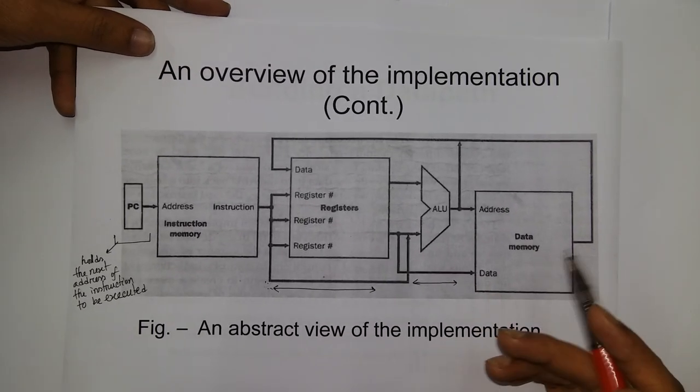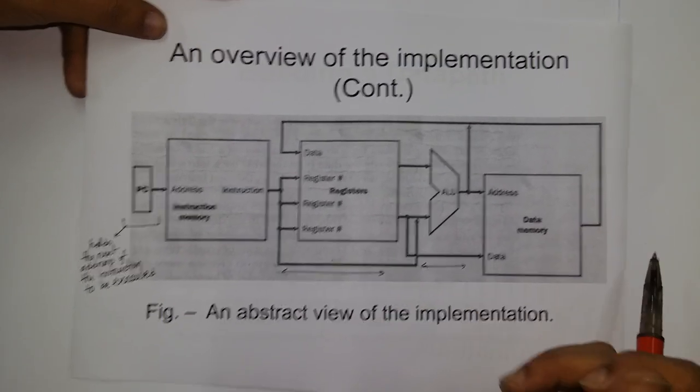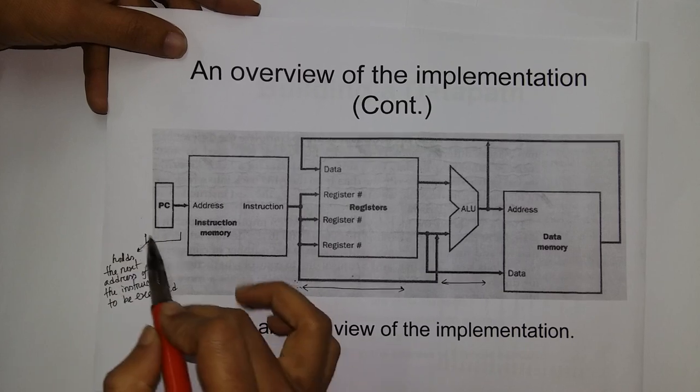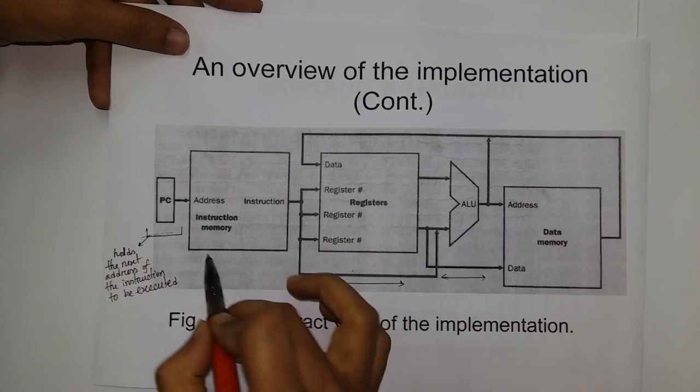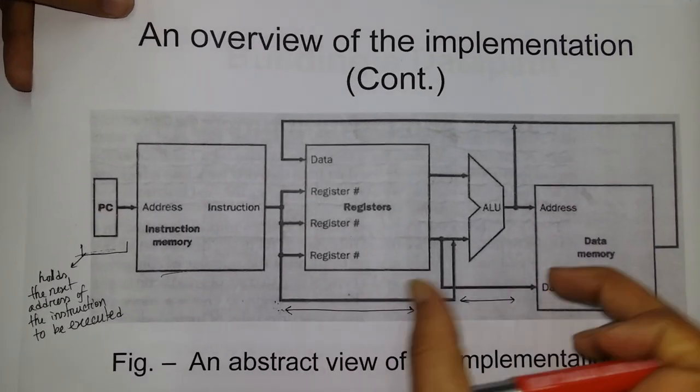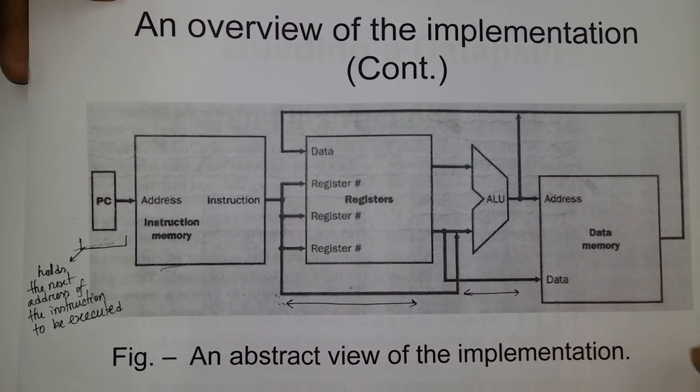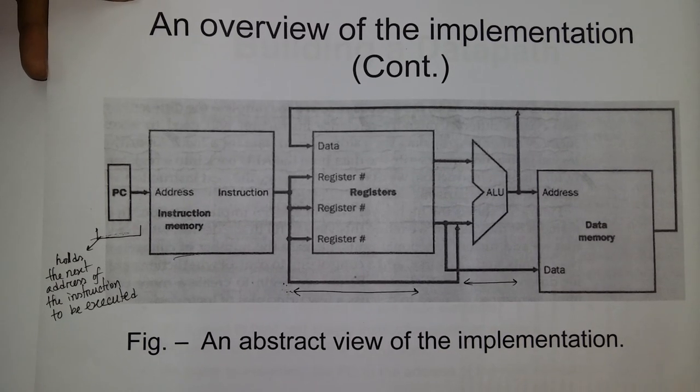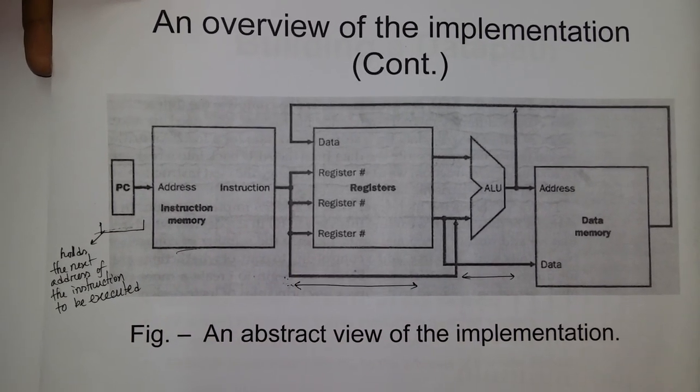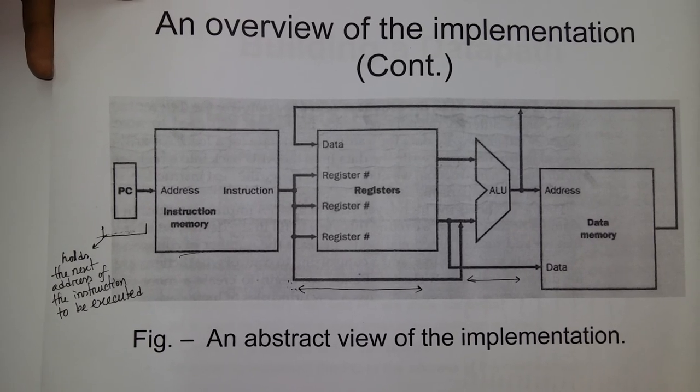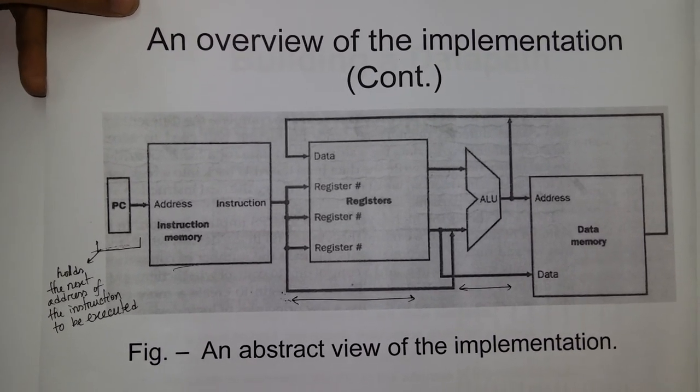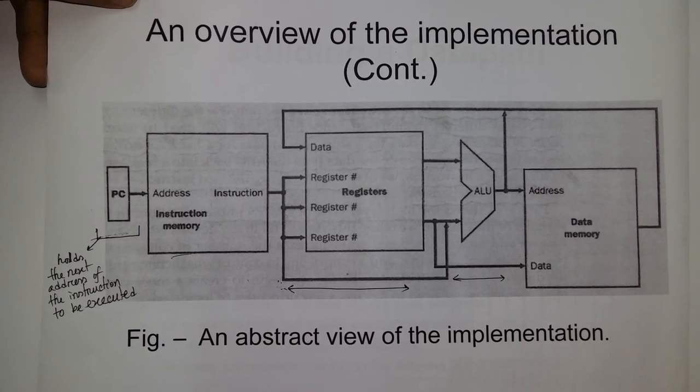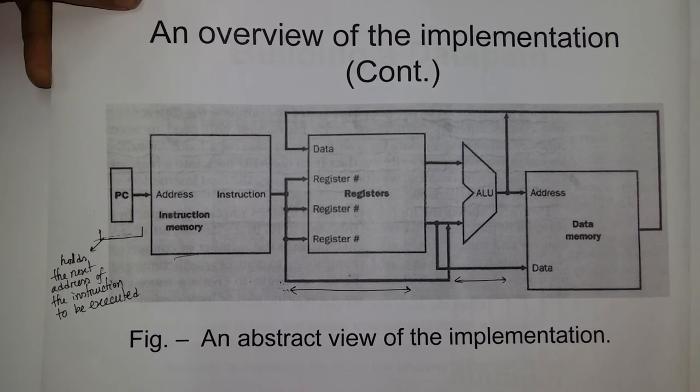First, the datapath for a computer processor consists of several key segments: program counter, instruction memory, registers, ALU, and data memory. These five blocks make up the computer processor. The datapath shows how these blocks are connected and how data flows between them.